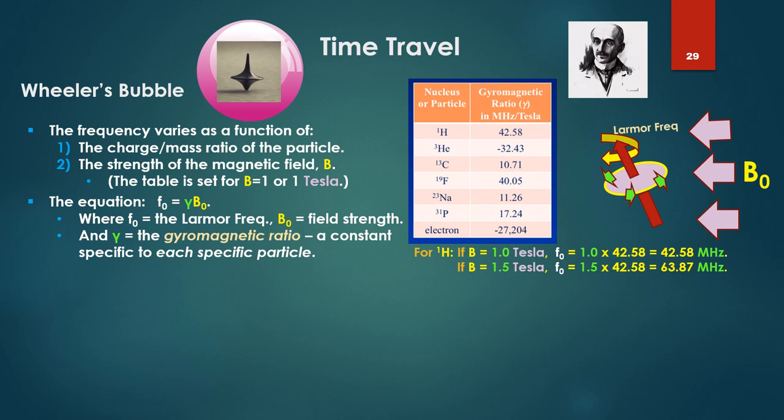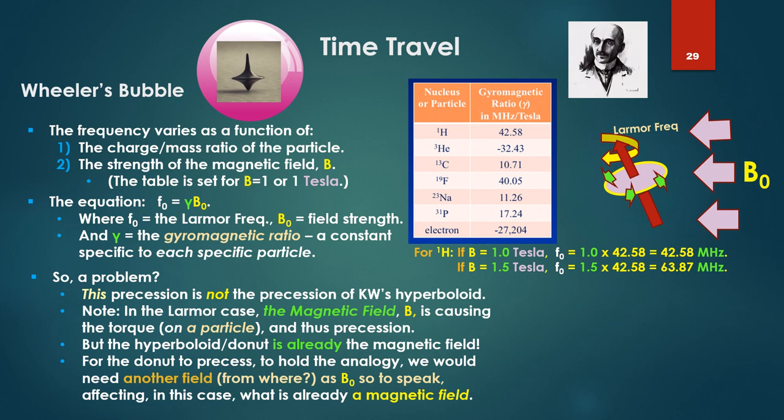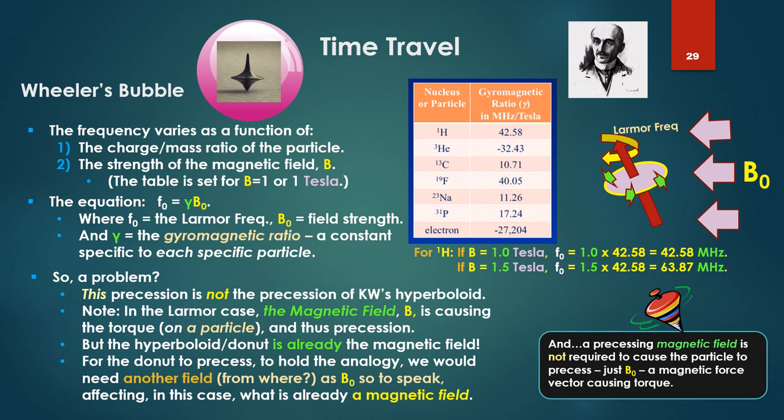So we have a little table here where we have a particle like hydrogen with the 42.5 megahertz. The equation then, F zero equals gamma beta zero. F zero is the Lamour frequency for each particle. Beta zero is the field strength. And the gamma there is the gyromagnetic ratio, which is a constant specific to each specific particle. So a problem here for Ken. This precession we're talking about here with B zero is not the precession of KW's hyperboloid or his reciprocation. Note, in the Lamour case, the magnetic field B zero is causing the torque on a particle and thus precession. But in the hyperboloid donut, it's already the magnetic field. For the donut to precess, to hold the analogy, we would need another field from where acting as B zero affecting what is already a magnetic field.